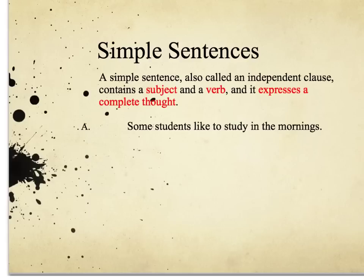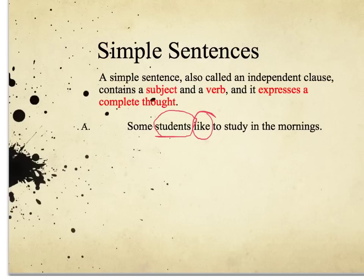For example: some students like to study in the mornings. The subject, which we need to have, is 'students' — who likes to study in the mornings? The students do. And the verb, which is an action word, is 'like.' The students like to study in the mornings, and it expresses a complete thought. So this is the simplest type of sentence.